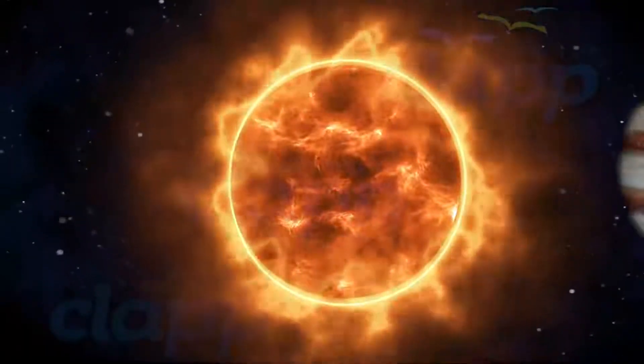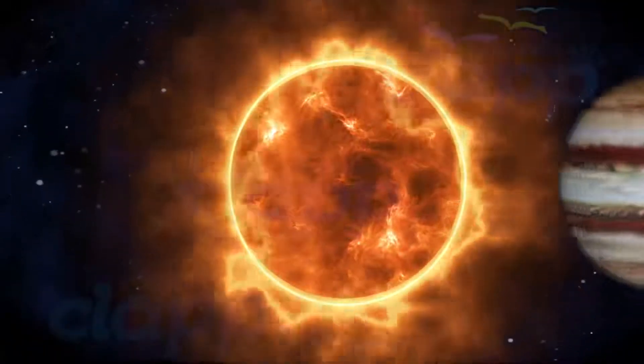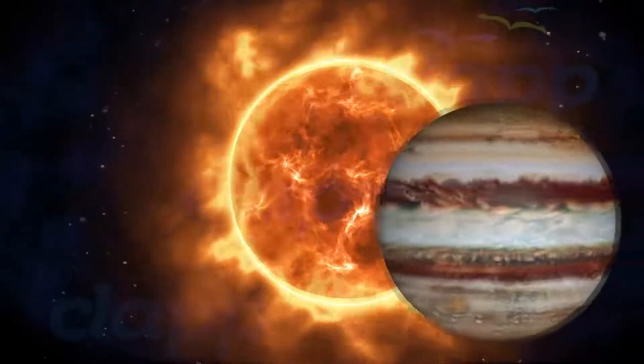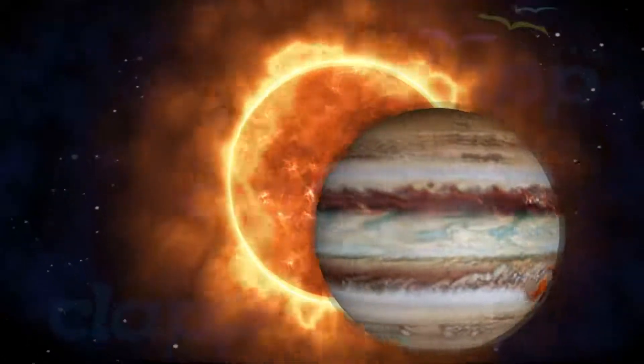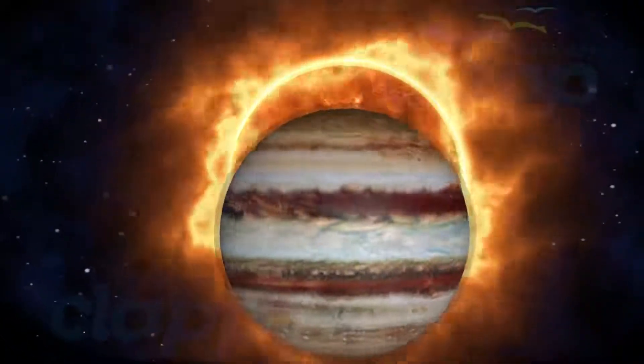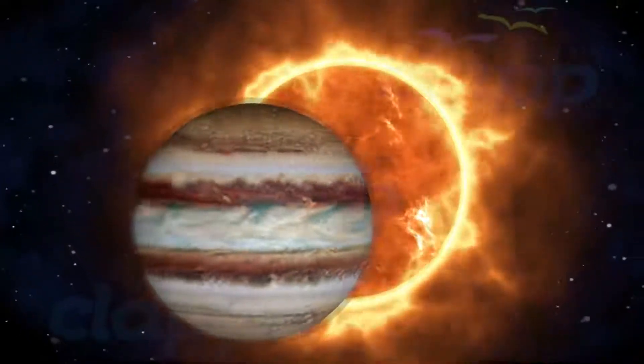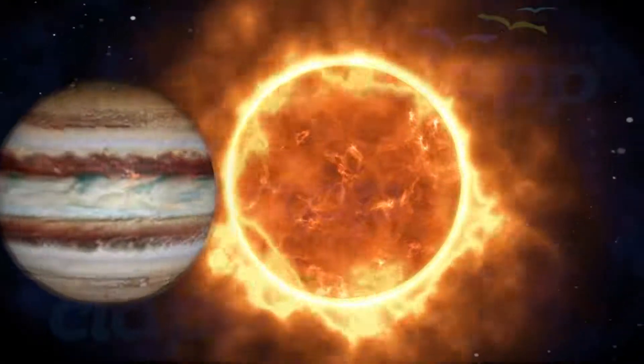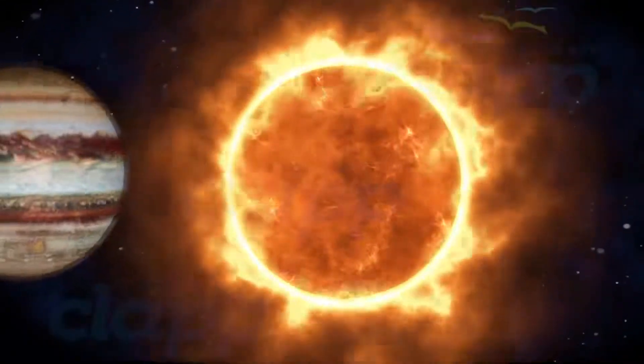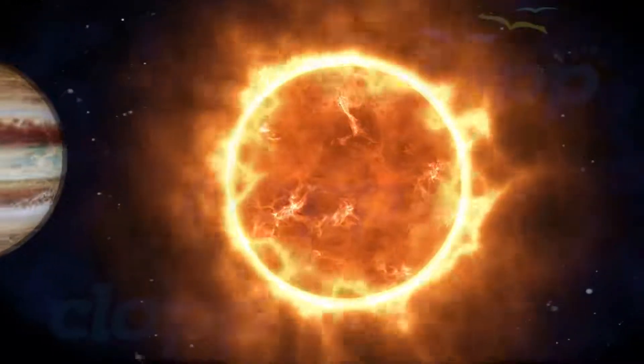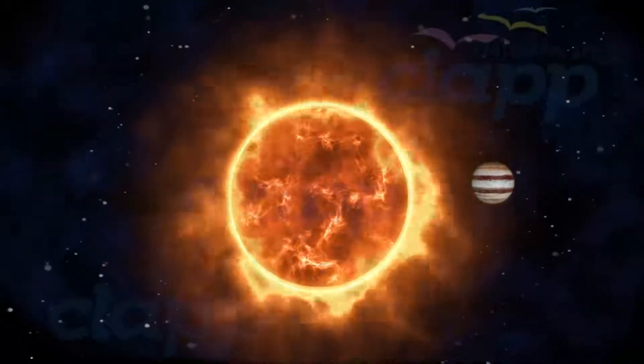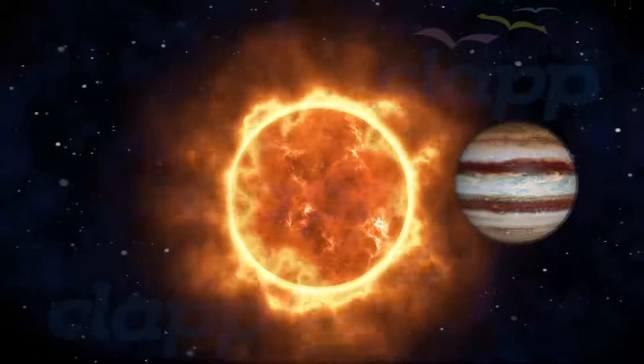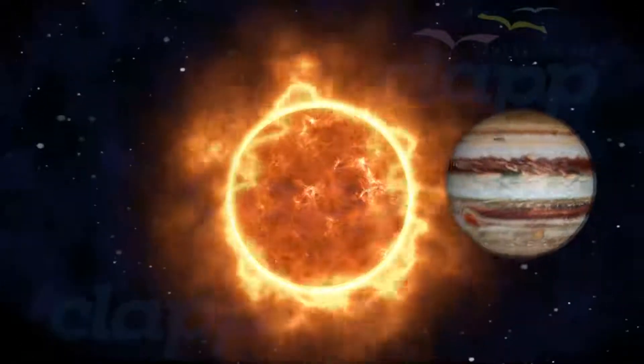Jupiter is primarily composed of hydrogen and helium. Jupiter's upper atmosphere is about 90% hydrogen and 10% helium by volume. Since helium atoms are more massive than hydrogen molecules, Jupiter's atmosphere is approximately 75% hydrogen and 24% helium by mass, with the remaining 1% consisting of other elements like methane, water vapor, ammonia, and silicon-based compounds.